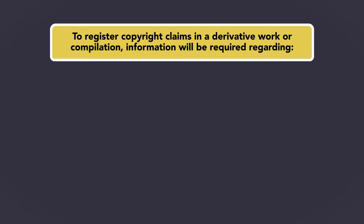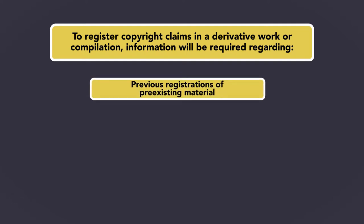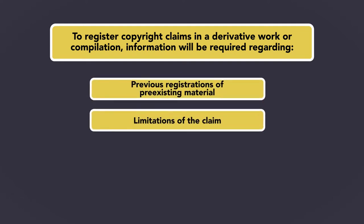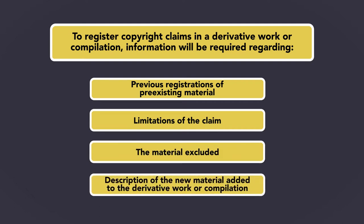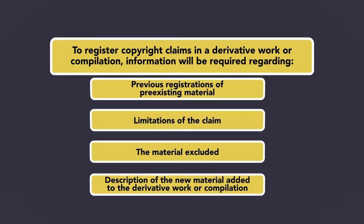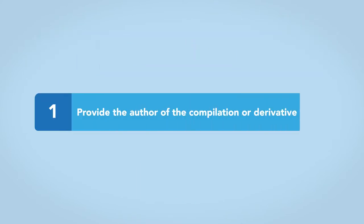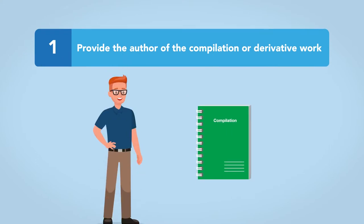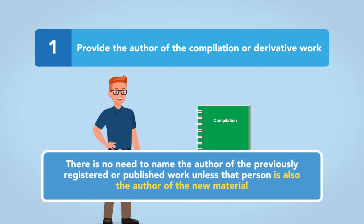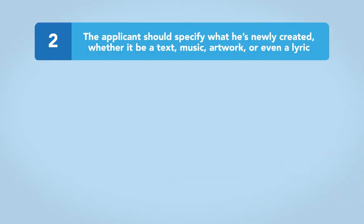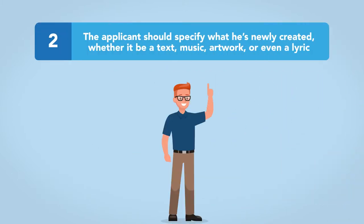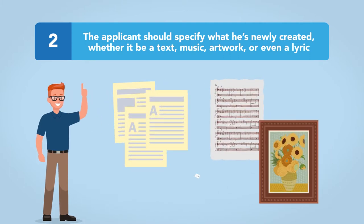To register copyright claims in a derivative work or compilation, information will be required regarding previous registrations of pre-existing material, limitations of the claim, the material excluded, and a description of the new material added to the derivative work or compilation. The U.S. Copyright Office provides the following recommendations for the steps required to register a derivative work or compilation. First, provide the author of the compilation or derivative work — there is no need to name the author of the previously registered or published work unless that person is also the author of the new material. Second, the applicant should specify what he has newly created, whether it be text, music, artwork, or even a lyric.